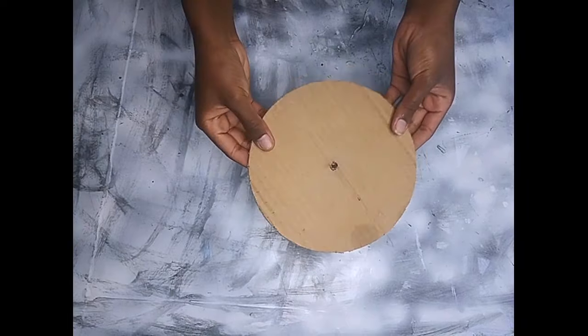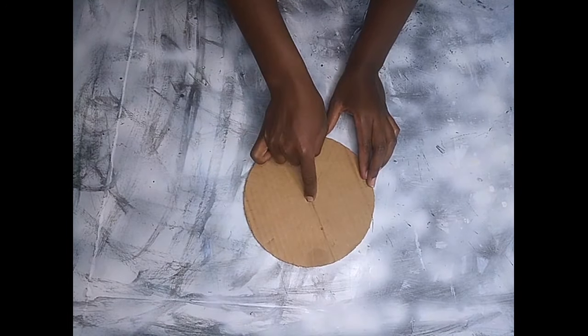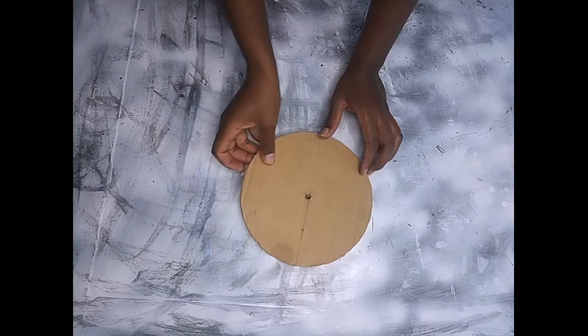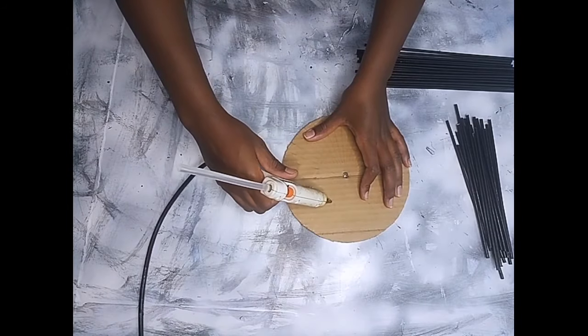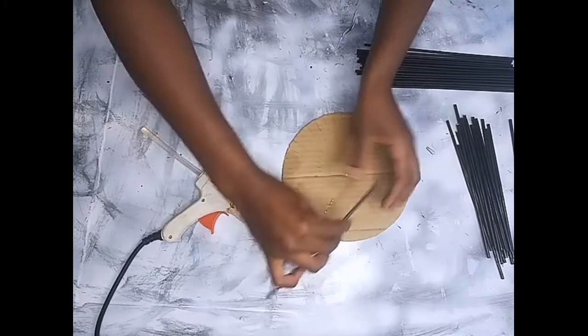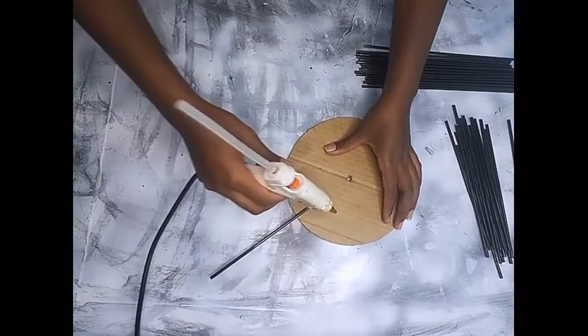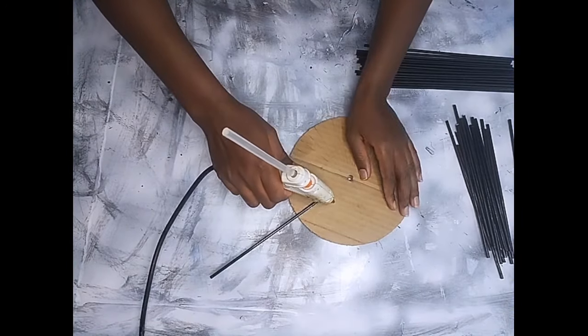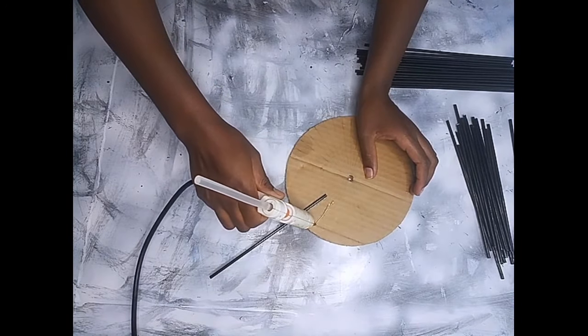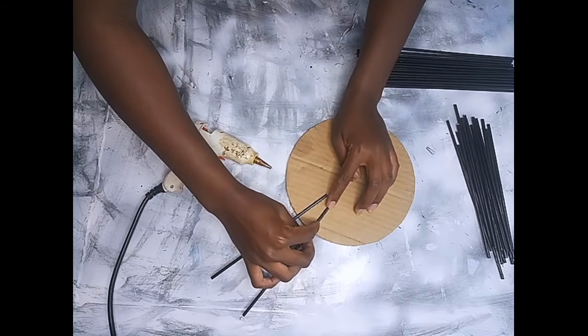Then I took my base. This is where I'll be placing the skewers. I'll be gluing them down one at a time using my hot glue. I started gluing down the first row, and then I'll glue down the second row, leaving a space, a line, where I'll glue down the second row for the skewers.